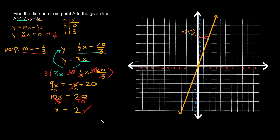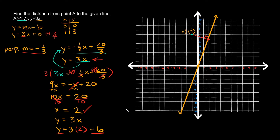Now that we know x equals 2, we can solve for y by plugging into the simpler equation y equals 3x. So y equals 3 times 2, which equals 6. The intersection point of the two lines is at (2, 6).